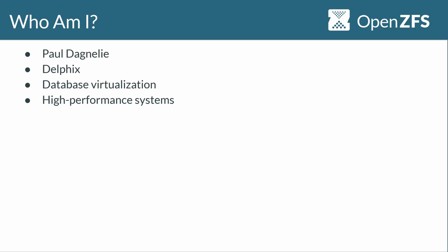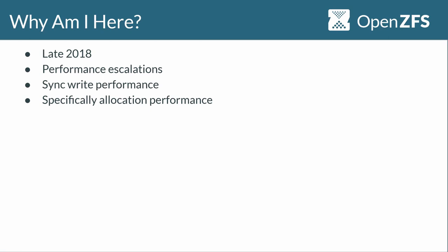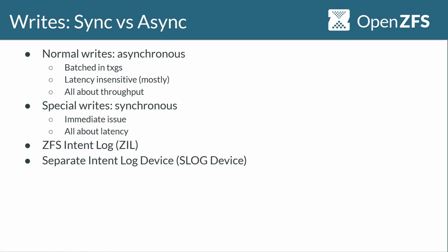In late 2018 we received a number of performance escalations from customers. They were running into performance problems, support escalated those to engineering, and we formed a team to try to understand what was going on. As we dug in, we discovered a number of problems with synchronous write performance and more specifically with allocation performance. I'm going to talk about synchronous versus asynchronous writes, how allocation works in ZFS, the problems we encountered, and how we addressed them.